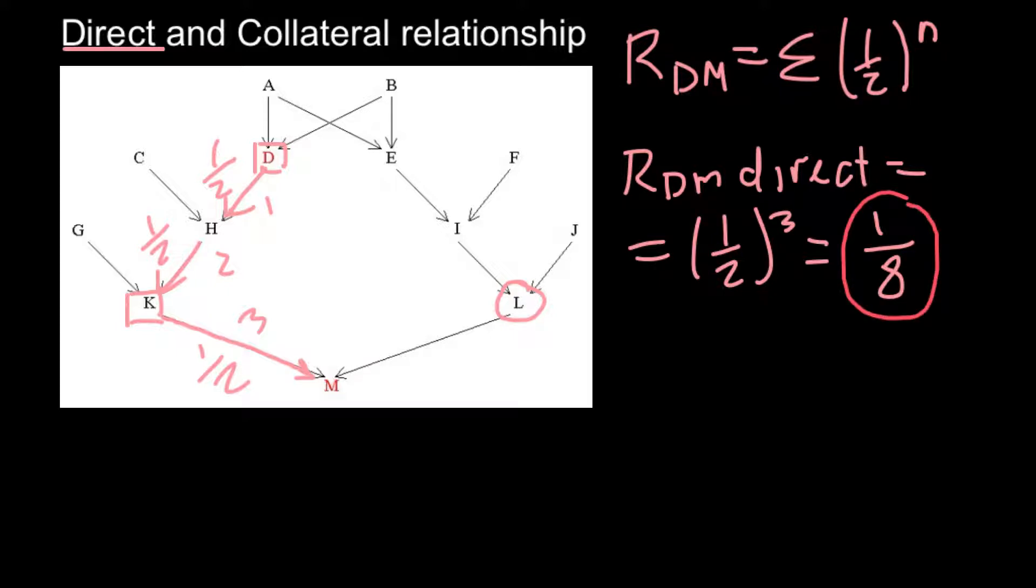And as you see, this person D can also relate to individual M through common ancestors. And common ancestors would be individual A and B. Because this is going to be relatives of both parents of individual M. So the first pathway would be through the individual A. So one, two, three, four, and five.